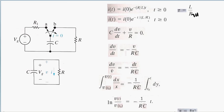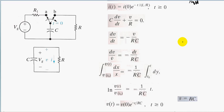Now let's look at the natural response of an RC circuit. For an RC circuit, we want to find the current relationship and the voltage relationship when a capacitor is releasing energy. We have a voltage source, a resistor, and a switch. The voltage source will charge this capacitor, and when the capacitor has been under steady state for a long time it will open. We disconnect the left side of the switch and allow the fully charged capacitor to release its energy through this resistor.